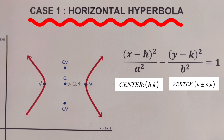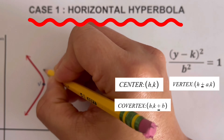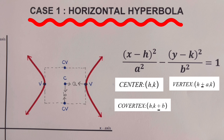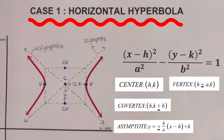The distance from the center to a co-vertex is b. The coordinate of the co-vertices is (h, k plus or minus b). To easily draw the asymptotes, we draw a rectangle covering the two vertices and the two co-vertices. The asymptotes of a horizontal hyperbola pass through the corners of the rectangle through the center. The equation of these two asymptotes is y equals plus or minus b over a, times the quantity (x minus h), plus k. We also have the foci.